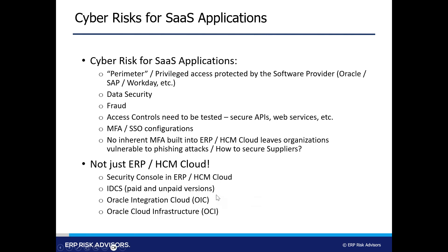Taking it back to the top level: for cyber risk in SaaS applications looking specifically at ERP or HCM Cloud, it's not just the access within the security console, IT Security Manager, or the core ERP HCM Cloud login that has to be evaluated. You also have the IDCS layer — different versions depending on what you purchase from Oracle — plus an integration layer which could be driven by Oracle Integration Cloud (OIC), and ultimately an OCI login. So it's really three or four systems that need to be secured, depending on how you've licensed the applications.